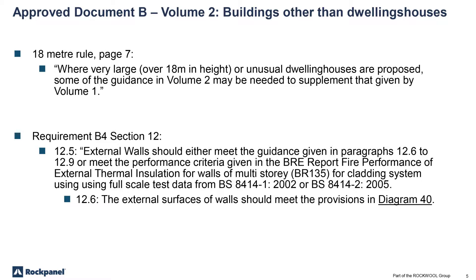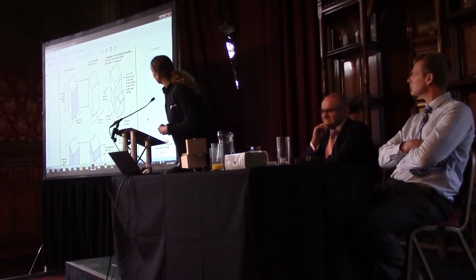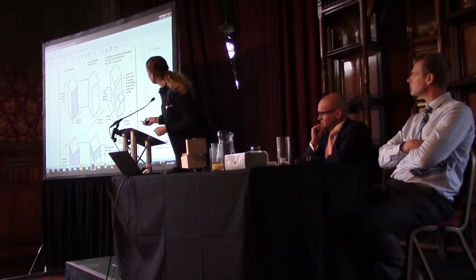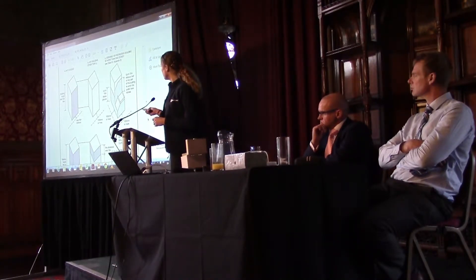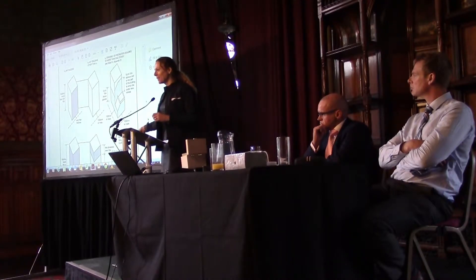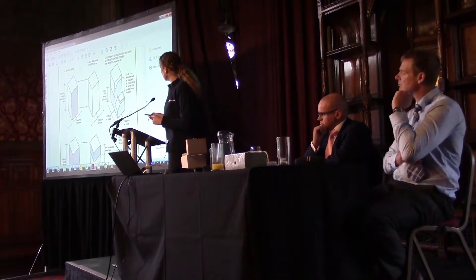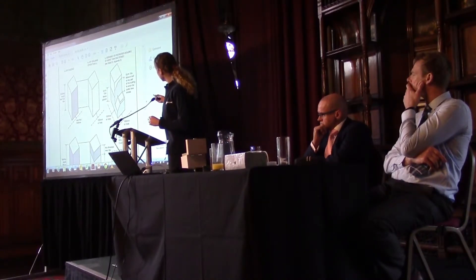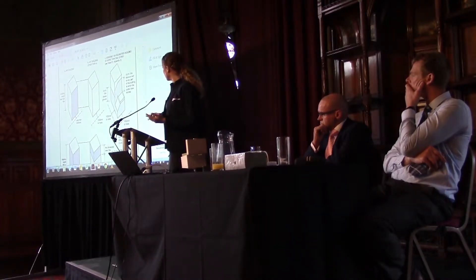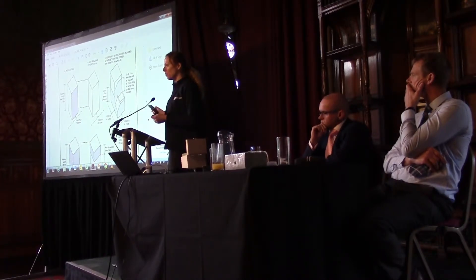Paragraph 12.6 states that external surfaces of walls should meet the provisions in Diagram 40. With this diagram, you could have a BS 8414 test of the cladding. In Diagram 40, the top left building — a building less than 18 metres — if it has a boundary of less than 1 metre, that cladding has to be minimum Euro Class B, S3, D2. If you've got any other building type that is assembly, recreation, hospital or hotel, the white legend indicates there is no provision in respect to boundaries, so you can put anything on a hospital or a hotel that's less than 18 metres — anything.